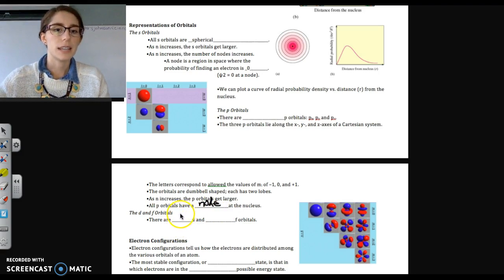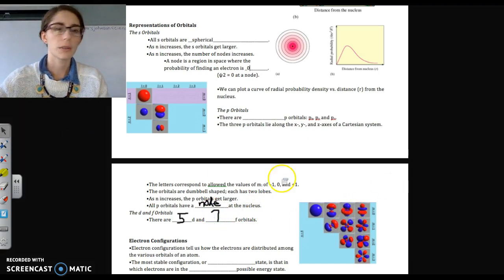And as far as d and f orbitals, we will use d orbitals. There are five d orbitals. When we start seeing them, there's five per energy level. And then there are seven f orbitals per energy level where they're present.